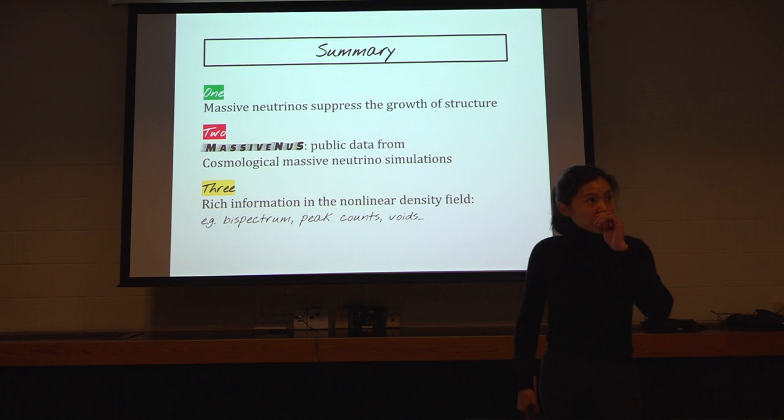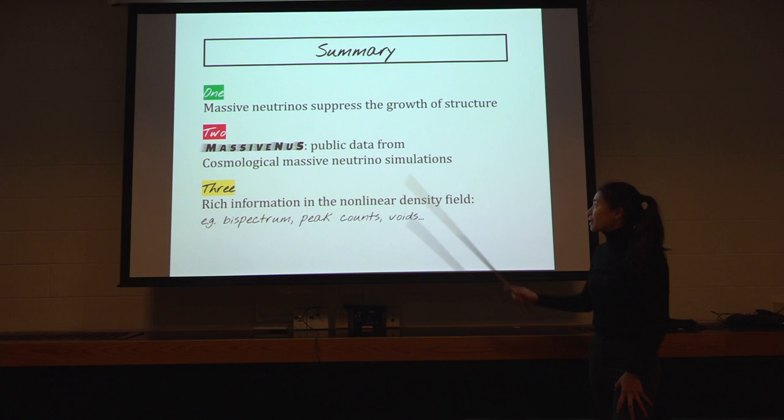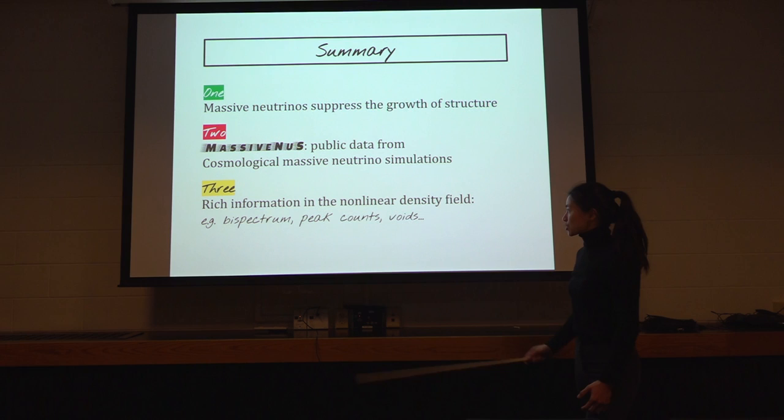But I just want to put up my summary so we can have some discussion. One, massive neutrinos suppress the growth of structure. Two, there are simulations that you can use to study more about neutrinos. It's all public. So please use them. Three, there's rich information in the nonlinear regime that is beyond two-point correlation function. And we should look into that. Thank you for your attention.